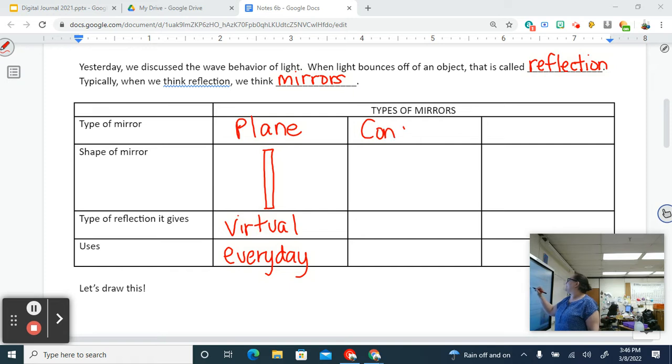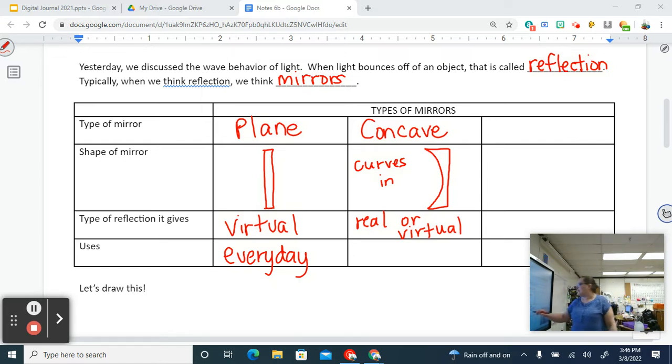Next up, we've got a concave mirror. Concave meaning that it caves in or curves in, like a cave. You can get a real or a virtual image from a concave mirror. It depends on how far away you hold it. Concave mirrors make the item appear larger. You see less of the area than you would in a plane mirror, but you see it bigger. You see it better. So it's very often used in makeup mirrors.